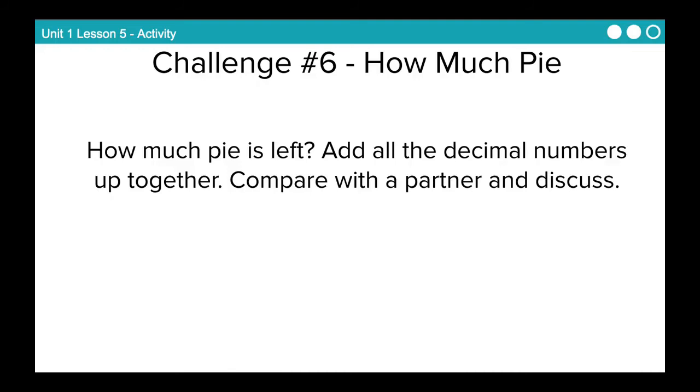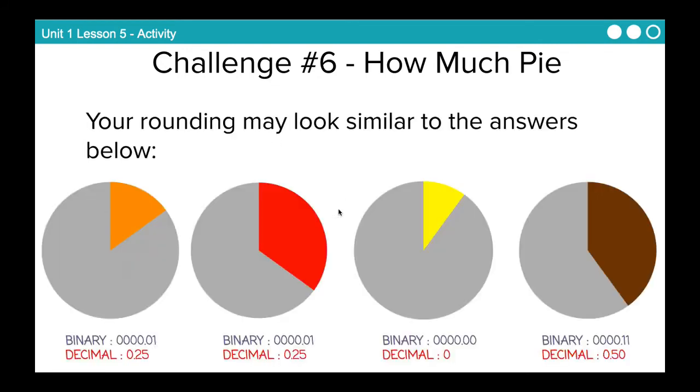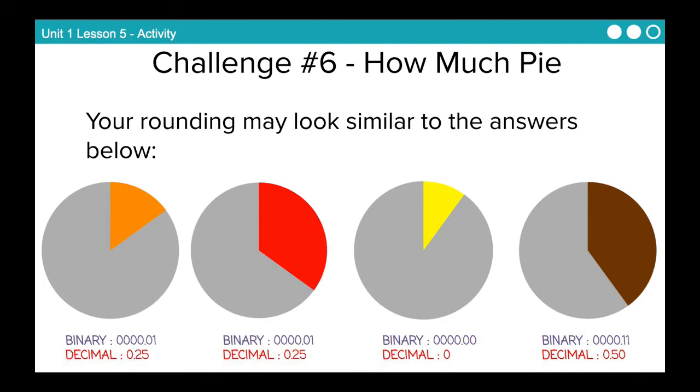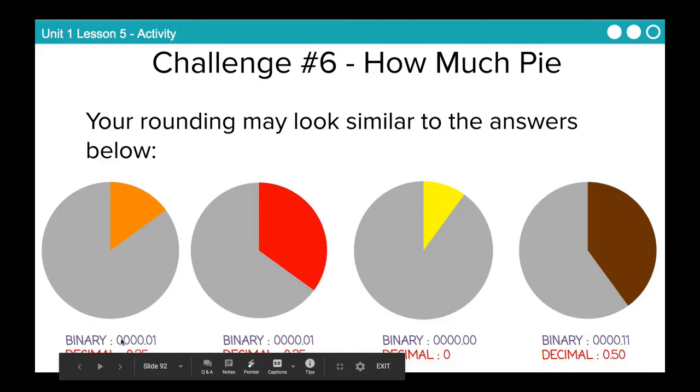So how much pie is left given what we've just calculated here? Add all the decimal numbers that you just listed up together. We're going to skip the part about comparing with a partner because we're working from home. But take all the decimal numbers for pies 1 through 4 and add them together and see what you got, what number you got. So your rounding may look similar to the answers below. So for me, this looks like a sixth. I think that's like 0.17. But this looks like a sixth to me. So I would calculate that it's 0.17. Now, you can't do 0.17 in our flippy-do because we don't have a way to represent that. So you probably would have rounded up to 0.25. And so once you did that, your binary would be 0-0-0-0-0-1.